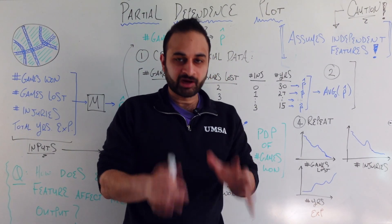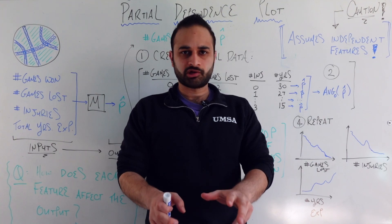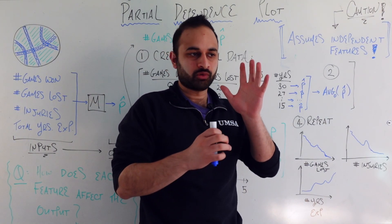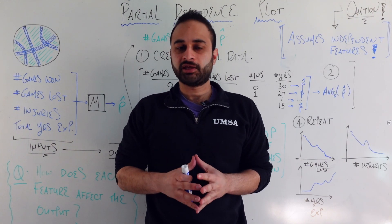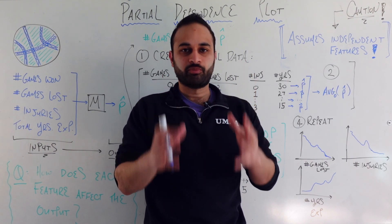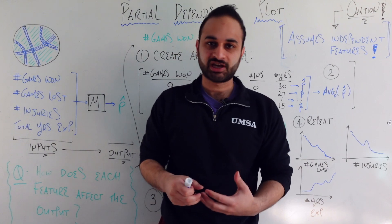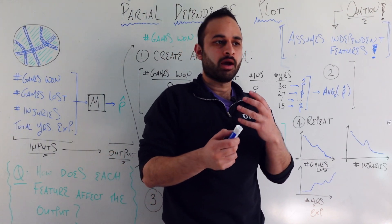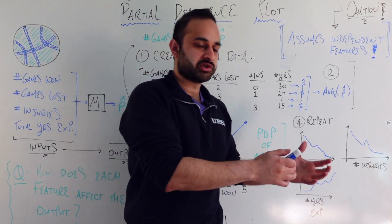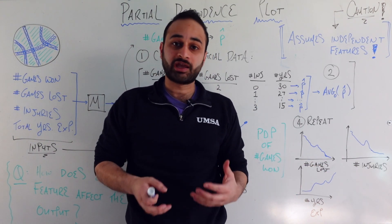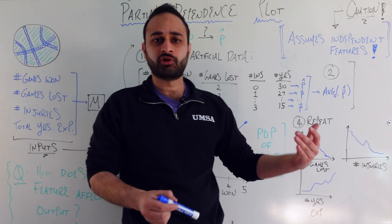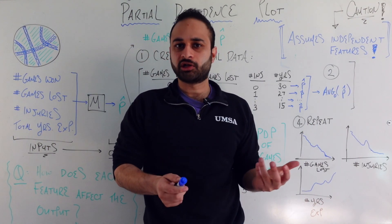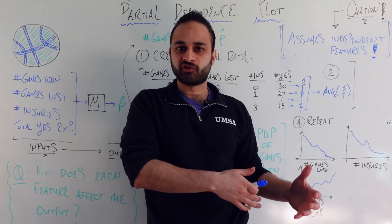Today we're going to talk about a very cool, very useful concept in data science called the partial dependence plot. This comes in really handy in bridging the gap between you — the data scientist or statistician who understands some models pretty well — and having to convey those results to other people in your organization who maybe don't have as much data experience or understand the mathematics of these models.